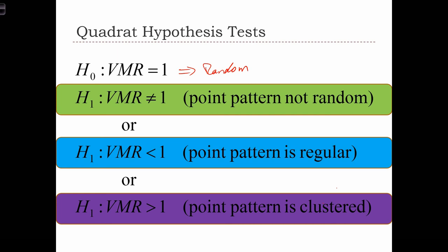The alternative hypothesis can either be non-directional, VMR not equal to 1, asserting that the point pattern is not random. Or we can do a directional test: VMR less than 1, asserting that the point pattern is regular or uniform or dispersed. Or the alternative hypothesis that the data are clustered, that the VMR is greater than 1.